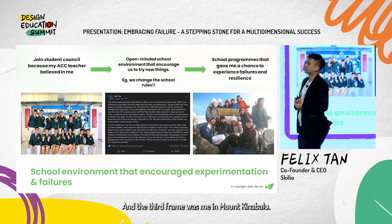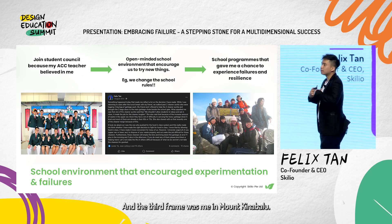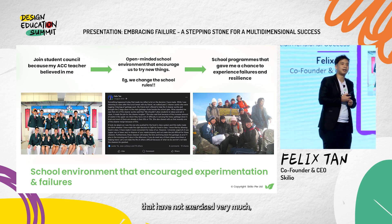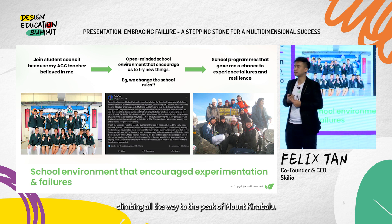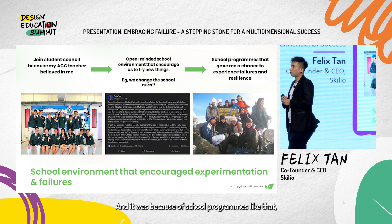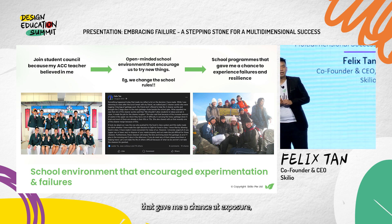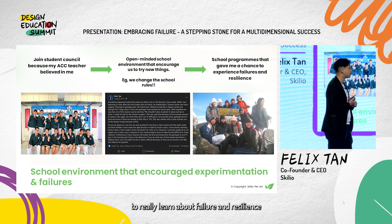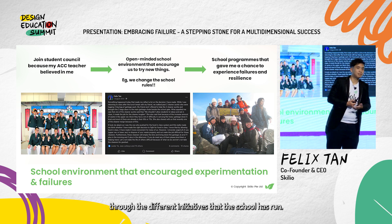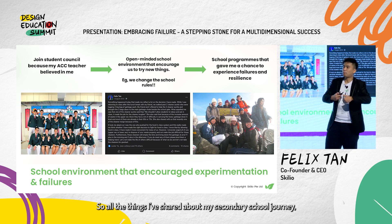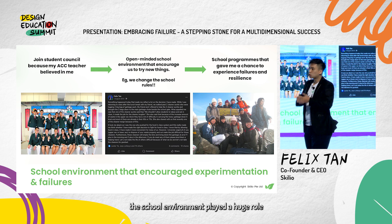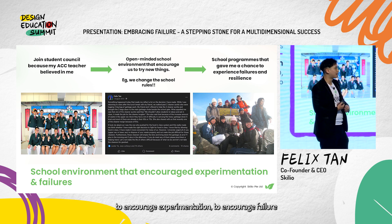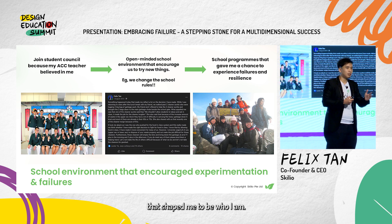The third frame shows me at Mount Kinabalu. As a 16-year-old who hadn't exercised very much, I climbed all the way to the peak. It was because of school programs like that, which gave me exposure to really learn about failure and resilience through the different initiatives the school ran. All the things I've shared about my secondary school journey show that the school environment played a huge role in encouraging experimentation, encouraging failure — and that shaped me to be who I am.